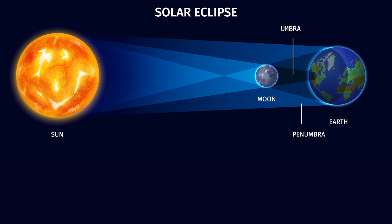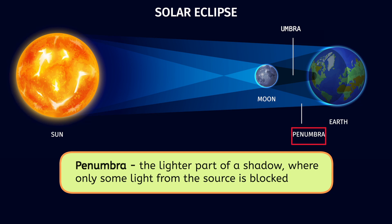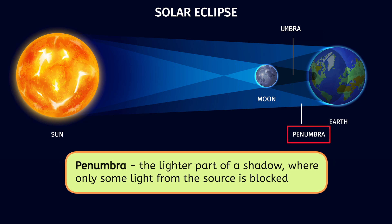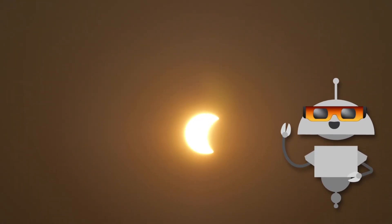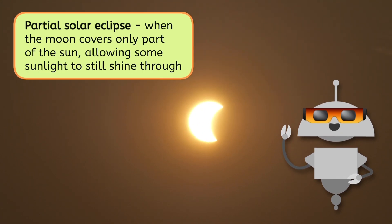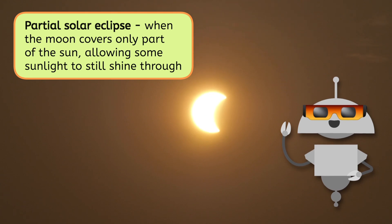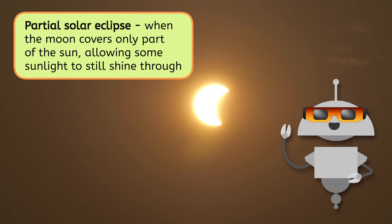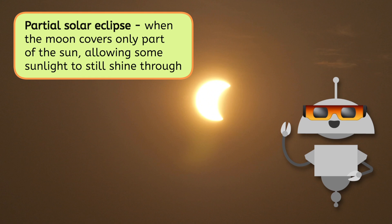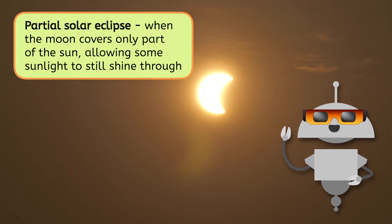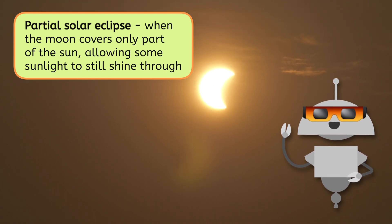But what if you're farther away and not quite in the umbra? That's the second part of the shadow, and it's called the penumbra. That's the lighter part of the shadow. It's where only some light from the source, in this case the Sun, is blocked. If you're in the path of the penumbra during a solar eclipse, you'll only see a partial eclipse, which is when the moon covers only part of the Sun, allowing some sunlight to shine through, creating a partial shadow on Earth. In contrast to a total solar eclipse, the penumbra can spread over a much larger area, sometimes even thousands of miles across.